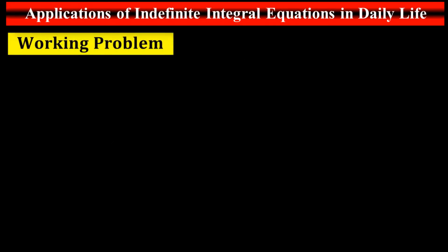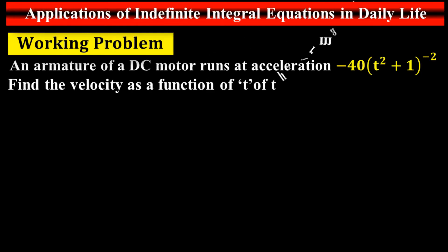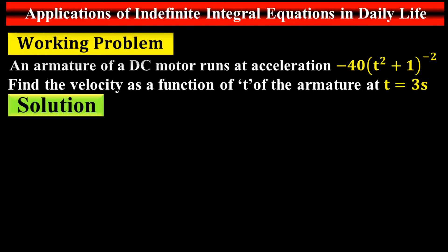Working problem: An armature of a DC motor runs with acceleration a = −14(t² + 1)⁻². Find the velocity as a function of t and the velocity of the armature at t = 3 seconds. As the armature starts, what will be the velocity after 3 seconds? Let's find the solution.